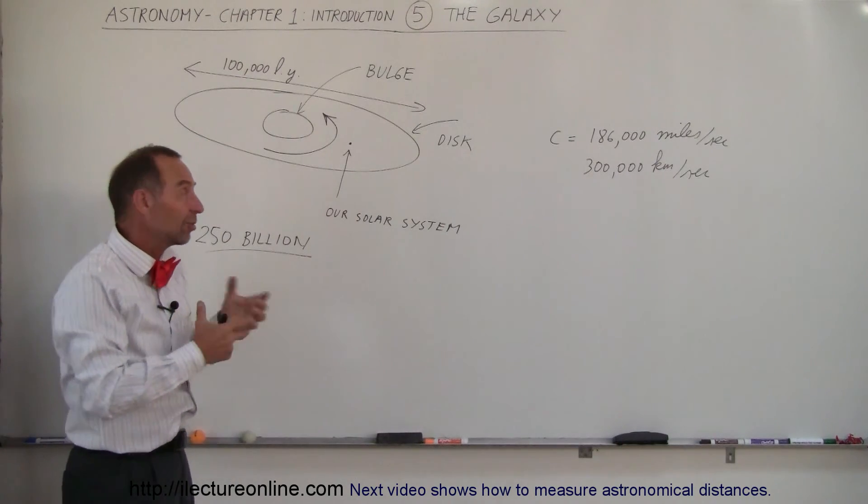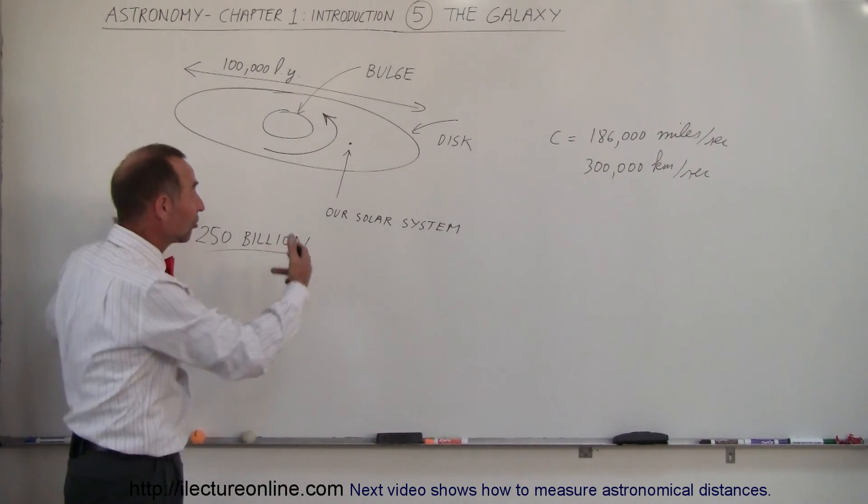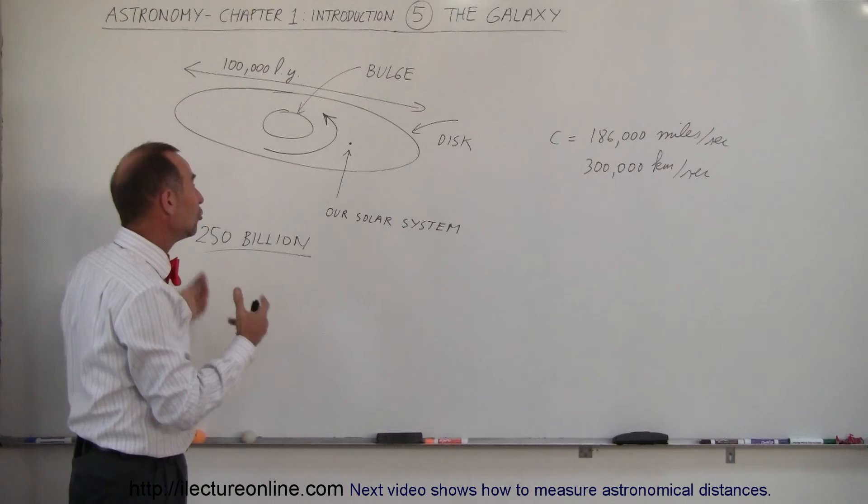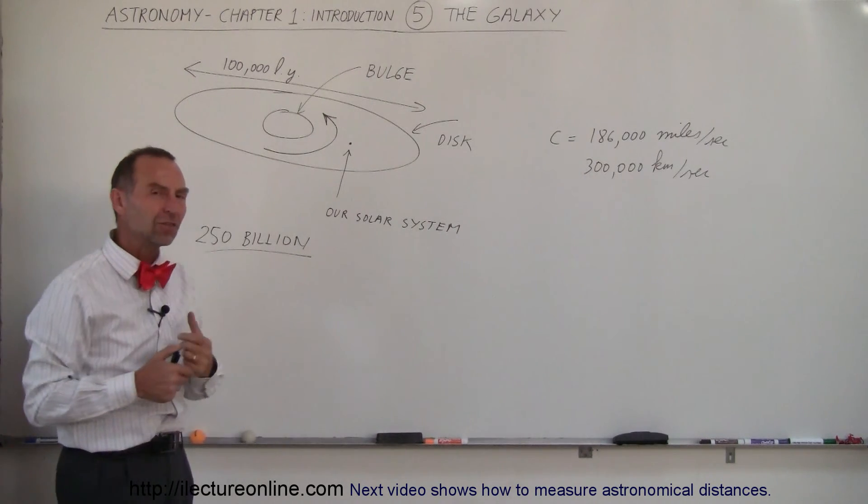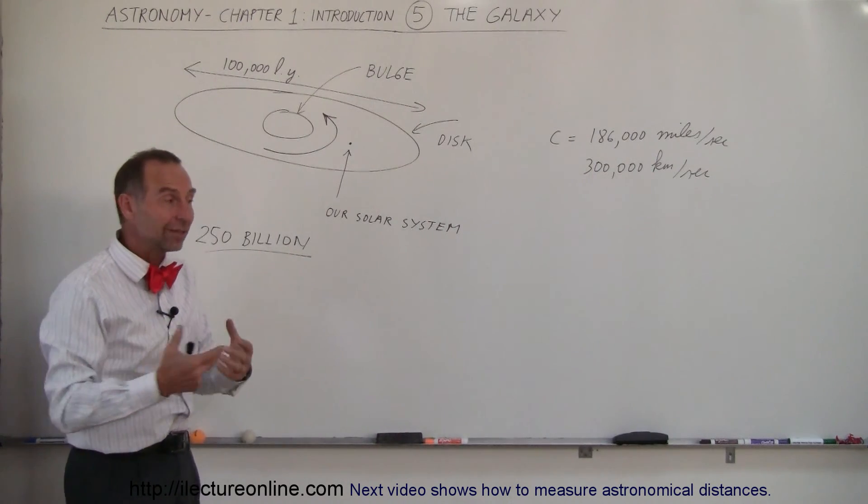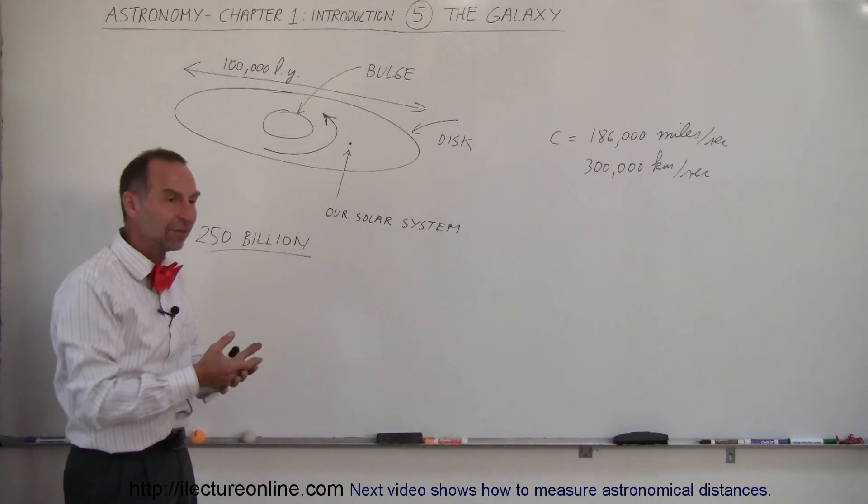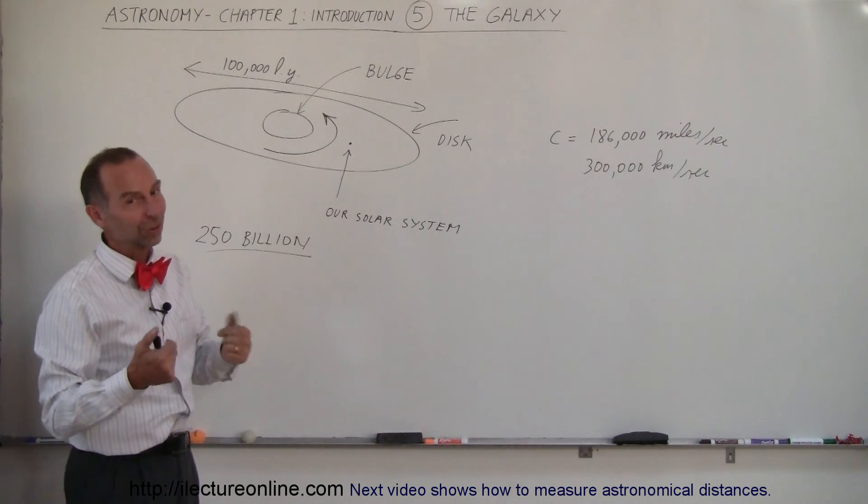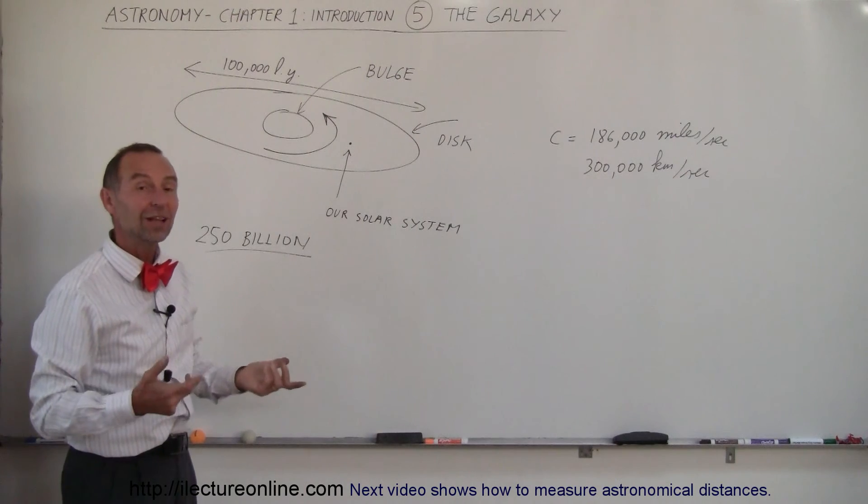Not all galaxies are this size, some are bigger, some are smaller, but here's the typical spiral galaxy, enormous in size, containing 250 billion stars, many of these stars containing planets, and who knows, some of those planets could contain life, and even intelligent life.